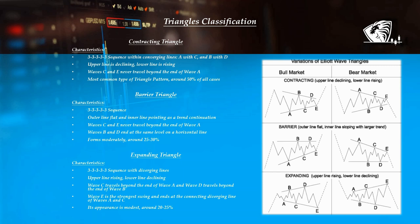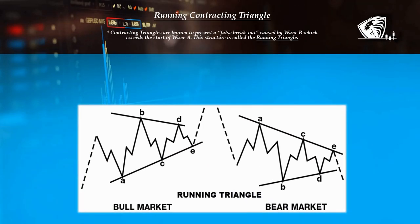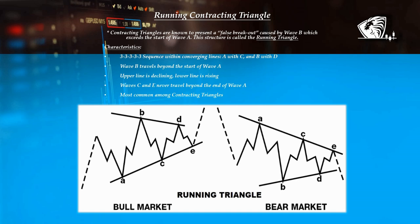Expanding triangle characteristics: 3-3-3-3-3 sequence with diverging lines. Upper line rising, lower line declining. Wave C travels beyond the end of wave A, and wave D travels beyond the end of wave B. Wave E is the strongest swing and ends at the connecting diverging line of waves A and C. Its appearance is modest, around 20 to 25% of all cases. Running triangle characteristics: 3-3-3-3-3 sequence with converging lines A with C and B with D. Wave B travels beyond the start of wave A. Upper line is declining, lower line is rising. Waves C and E never travel beyond the end of wave A. Most common among contracting triangles.